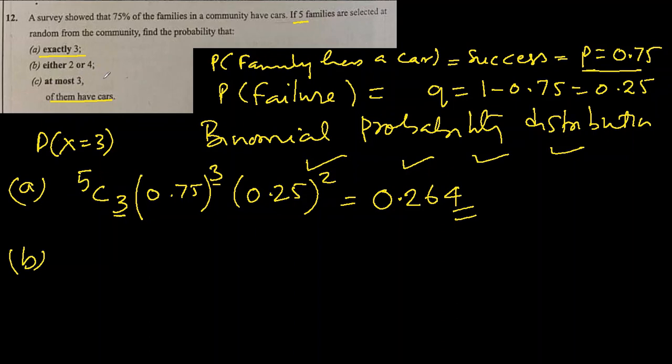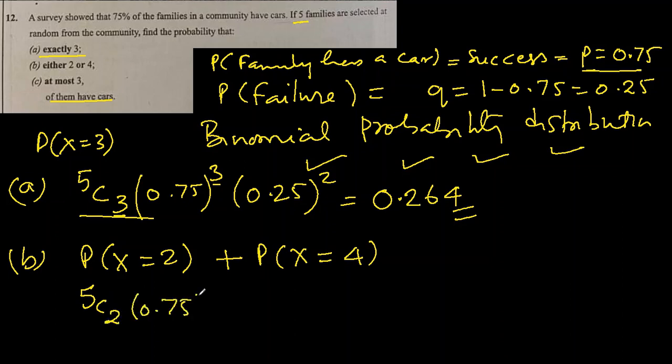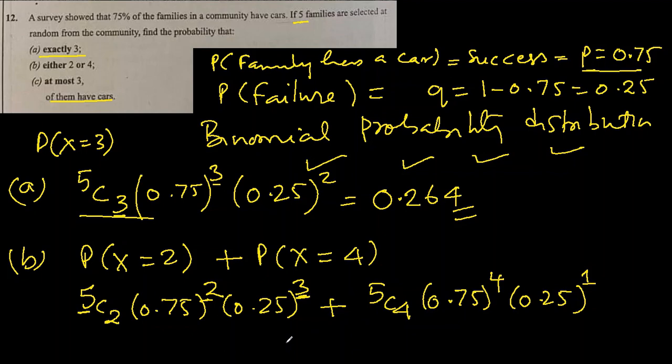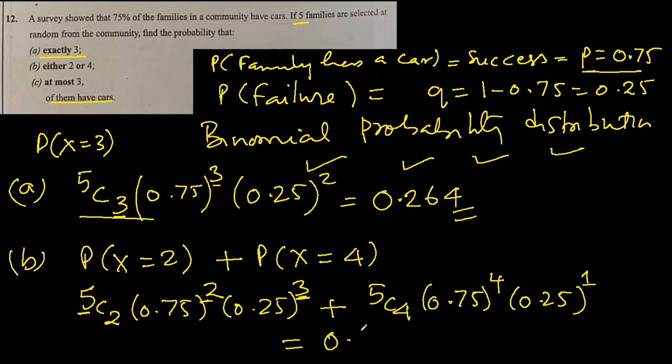B. Either 2 or 4. So we'll find P(X = 2) or—in case of or, we add them—X equal to 4. So I will just interpret it just like this. So 5C2 this time, 0.75 squared, 0.25 cubed. This exponent plus this exponent should always be equal to the number of selections, 5. Plus 5C4, 0.75 to the power 4, 0.25 to the power just 1. Equal to 0.483 is the answer.